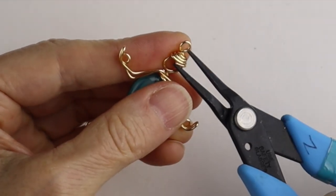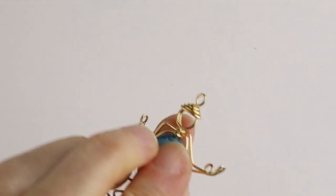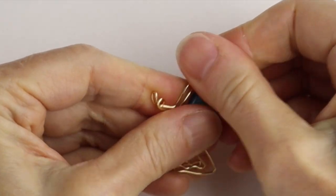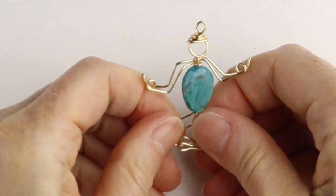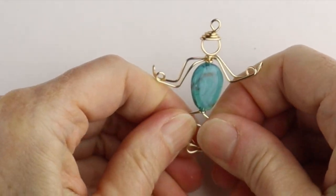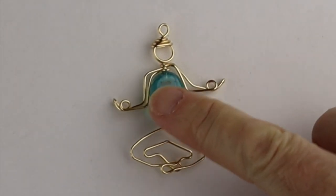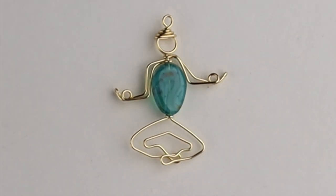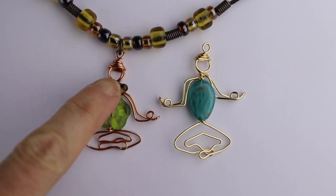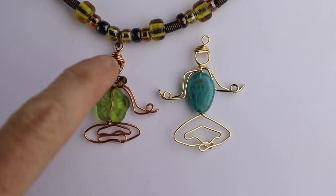You can push that little end in if you want and then just do any adjustments you want and spread these out a little bit if you want. And there you have your little yoga figure. This bead is a little bit big but you get the general idea. If you want to add a little necklace, just add a little wire around the neck and put some little beads on.